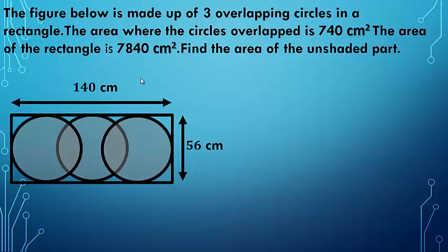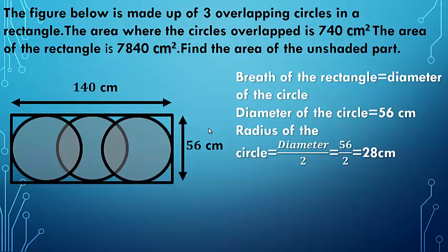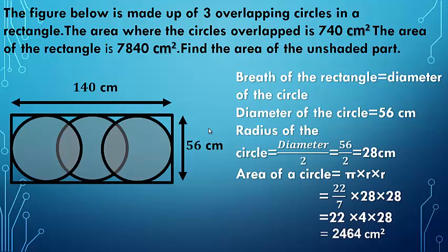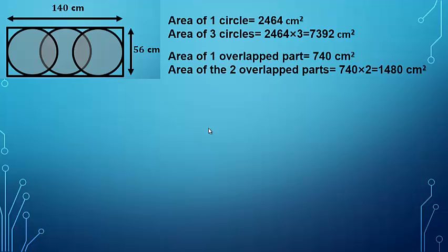One overlap part is common to the first and second circle, and another overlap part is common to the second and third circle. The diameter of the circles is the same as the breadth of the rectangle, so the diameter is 56 centimeters, the radius is 28 centimeters, and the area of one circle is π r² = 22/7 × 28 × 28 = 2464 centimeter square. The area of three circles equals 2464 × 3, which is 7392 centimeter square.